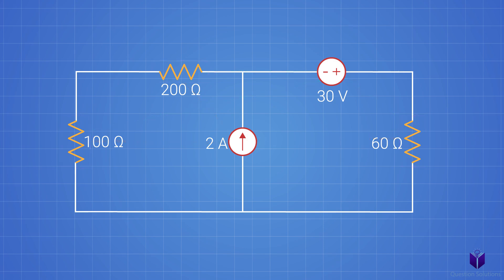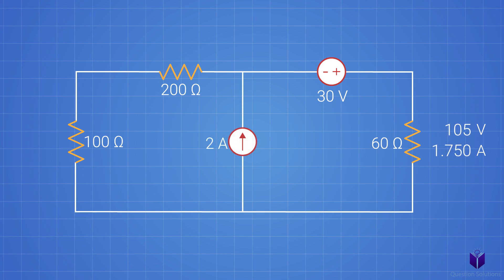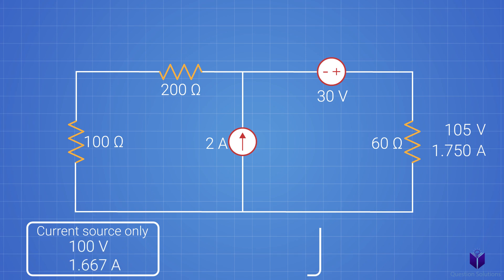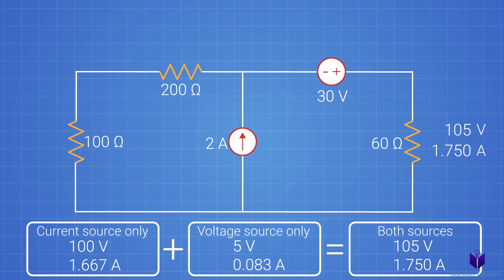For example, the current and voltage values of this resistor are these with both sources. But if we remove this voltage source, our current and voltage changes. And if we remove the current source instead, then our current and voltage changes to this. In very simple terms, each of these sources gave a portion of voltage and a portion of current. So if we were to figure out each of these portions from each individual source and then add it all together, we get the full picture. That's what superposition is all about.